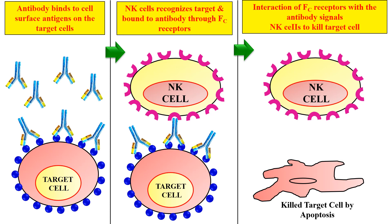To recap the ADCC mechanism: it is antibody-dependent because the antibody must first bind to the target cell — without an antibody, the natural killer cell would not recognize or kill the cell. Cell-mediated means natural killer cells are involved. Cytotoxicity means the degradation or killing of the target cell. So antibody-dependent cell-mediated cytotoxicity is the killing of a cell that depends on the antibody and involves natural killer cells. ADCC is generally involved in killing tumor cells, cancer cells, or virus-infected cells.